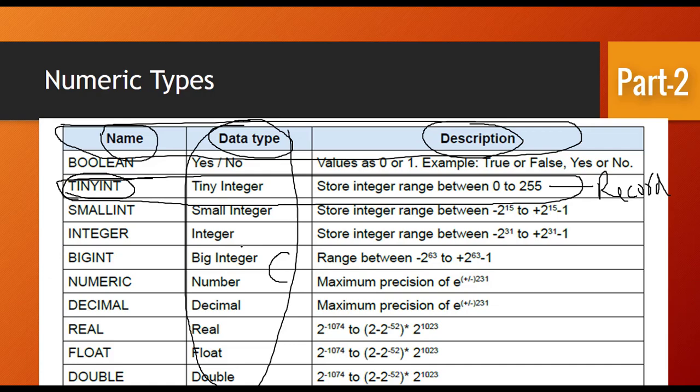TinyInt stores 0 to 255 characters or numbers. SmallInt stores integer range between minus 2 to the 15 to plus 2 to the 15 minus 1. Generally, we use Boolean, Integer, BigInt - sometimes we use these. We mostly use Boolean and Integer values. We also use Decimal, which means point value. If we need a bigger value than Decimal, we use Double. Float and Real are also available. You can use Decimal for maximum precision. These are numeric data types, in which we most commonly use Integer, then Decimal, then Boolean, or Double.